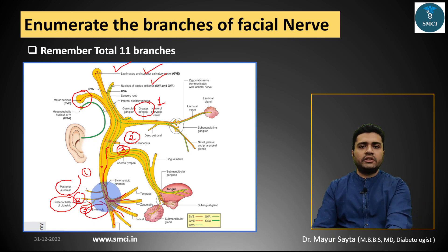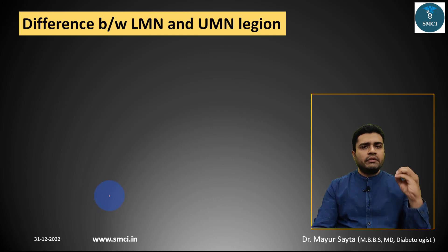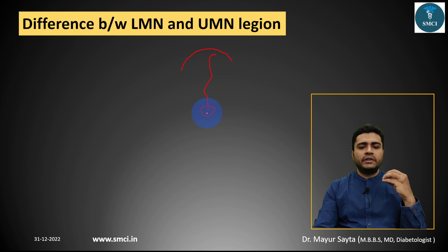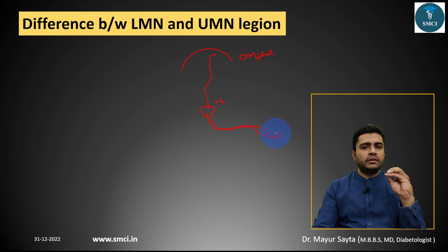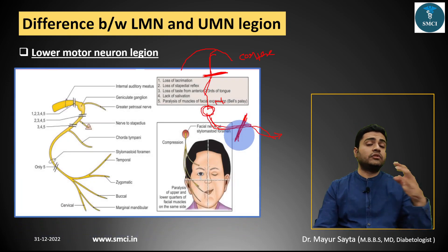The third question: the difference between lower motor neuron and upper motor neuron lesion. In the motor pathway there are two levels of neurons — one starting from the cerebral cortex ending at the nerve nucleus, and another from the nucleus reaching the effector organ. If the lesion is between the cortex and the nucleus, it is an upper motor neuron lesion; if from the nucleus to the organ, it is a lower motor neuron lesion.